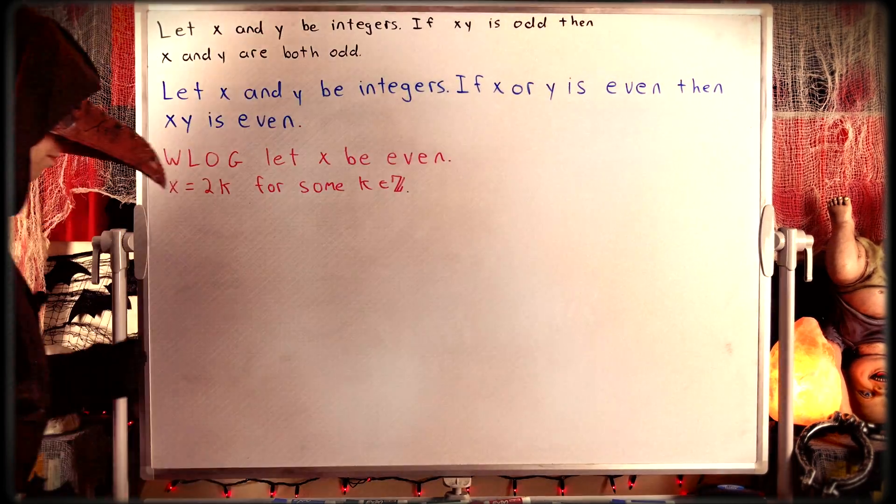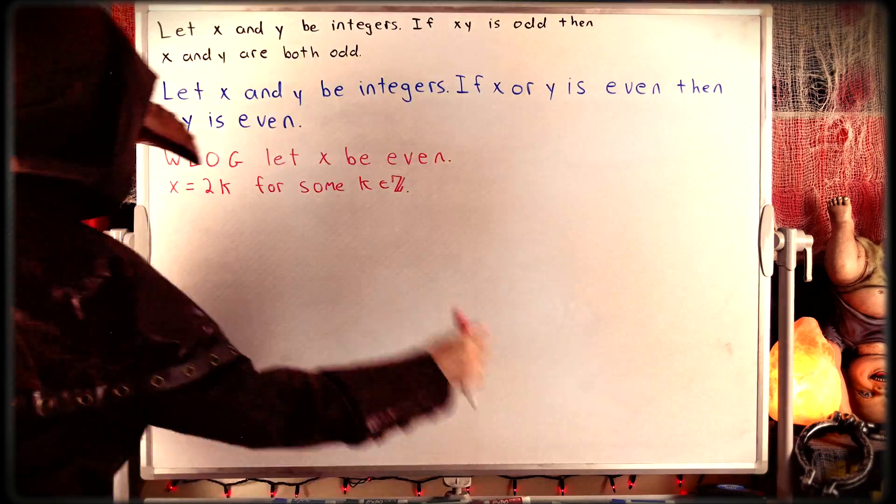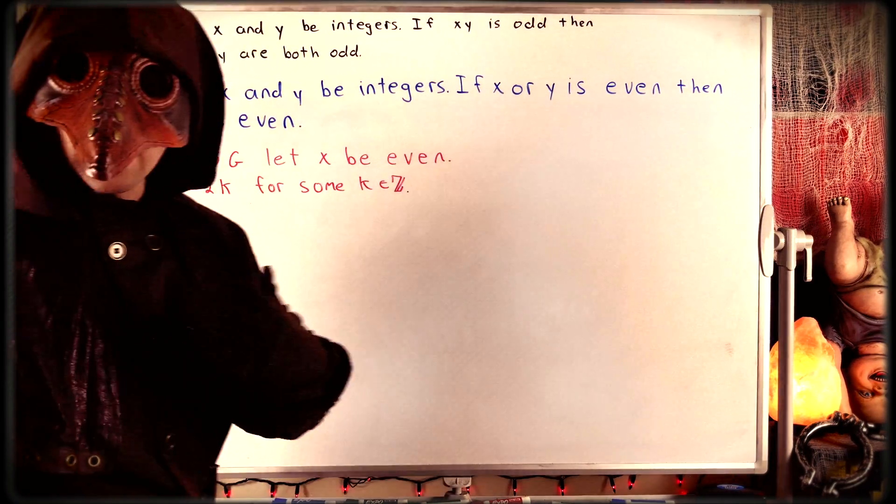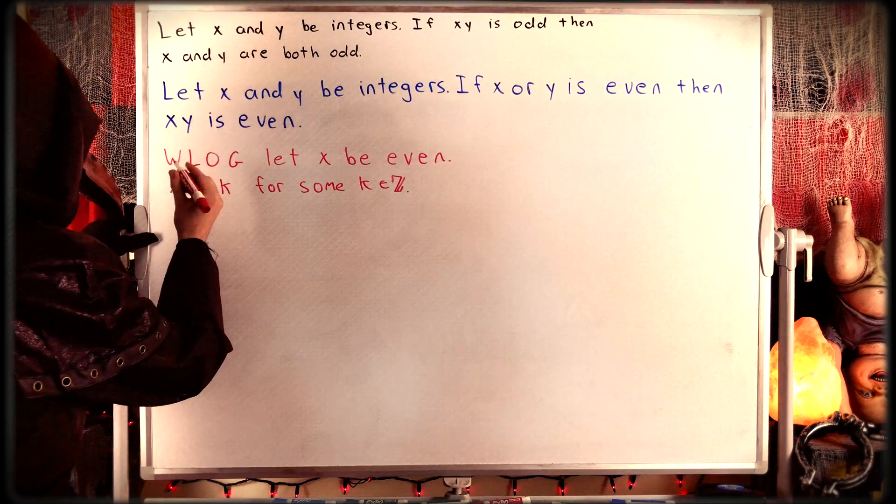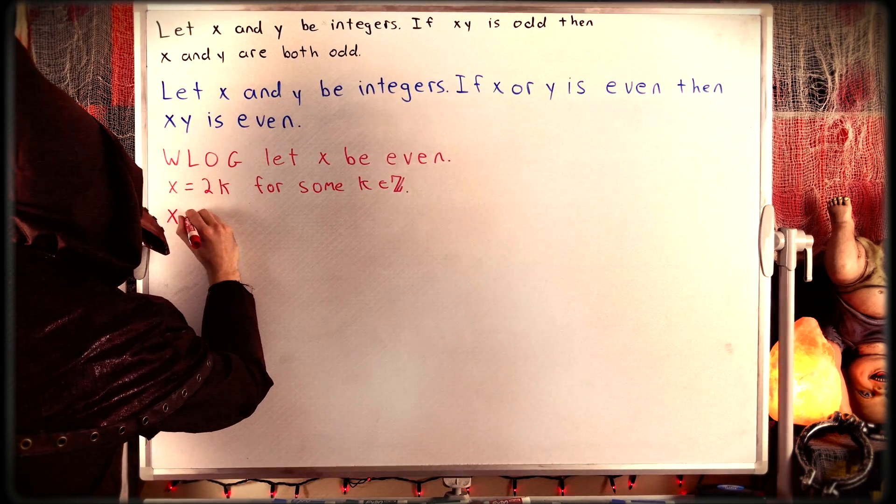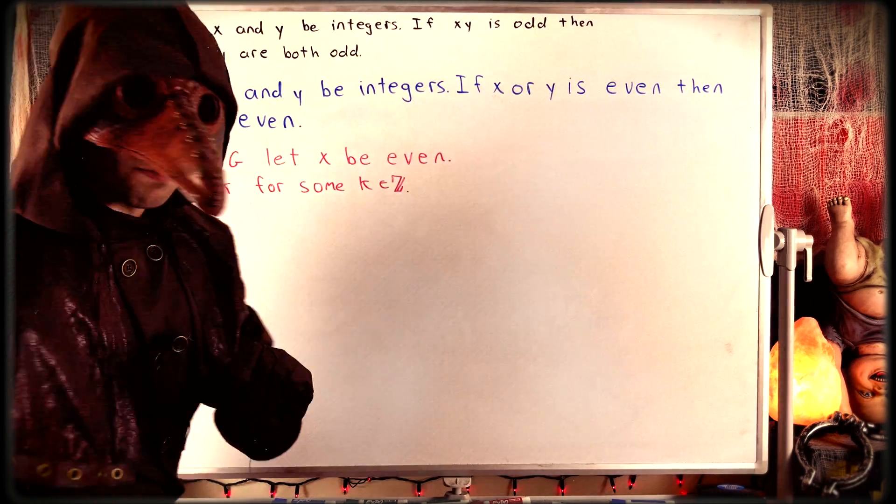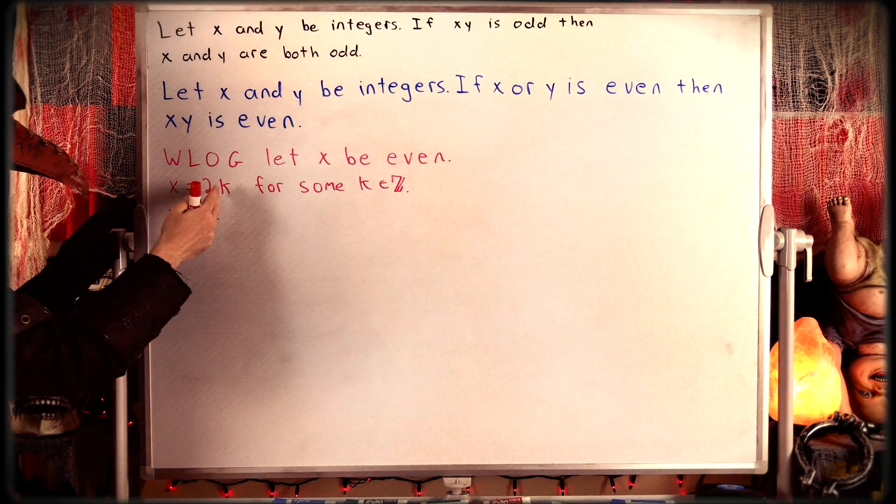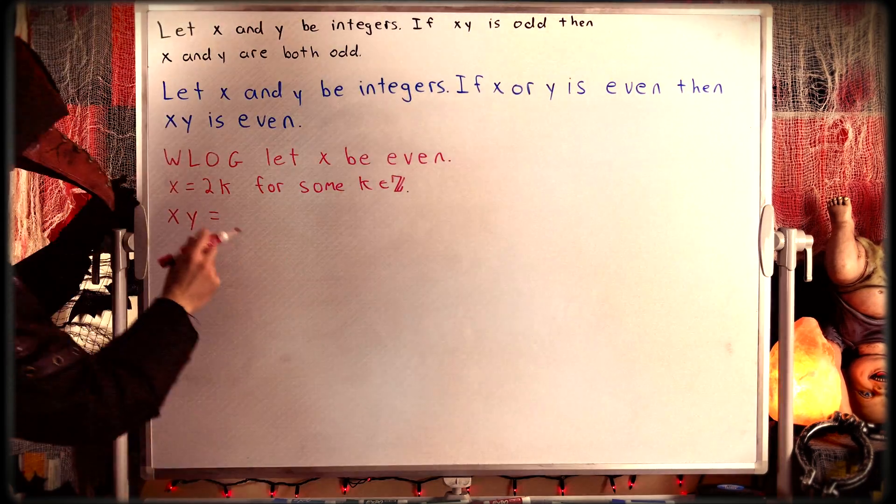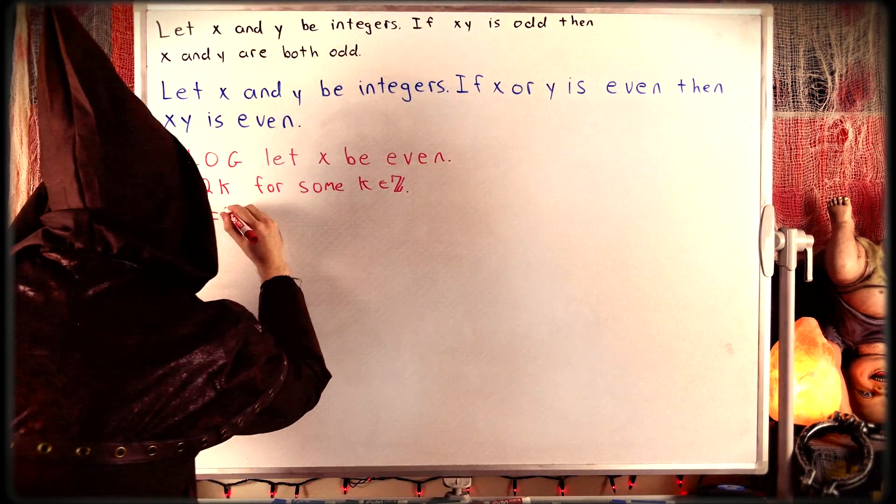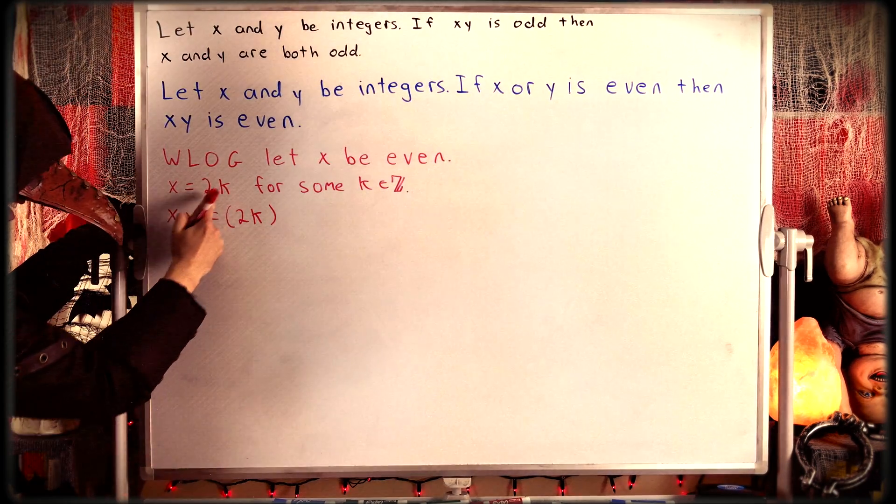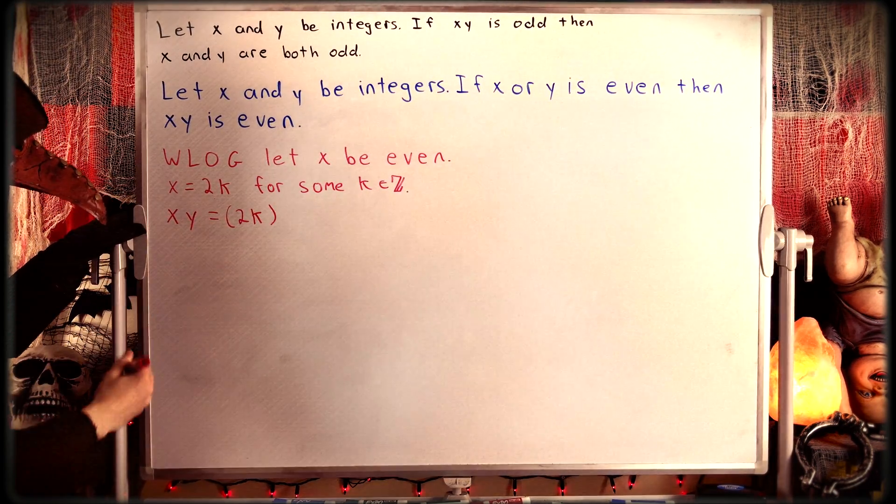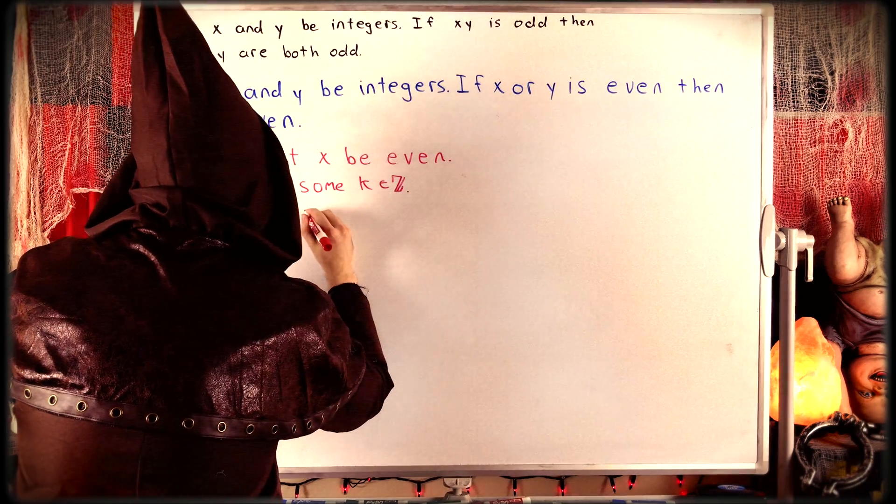Now, I think the rest of the proof is pretty clear. We, of course, want to show that x times y is also some integer multiple of 2. Well, what is x times y? Let's write it out. xy must be equal to, by substitution of the even definition we just applied, xy is equal to 2 times k, that's substituting 2k in for x, multiplied by y.